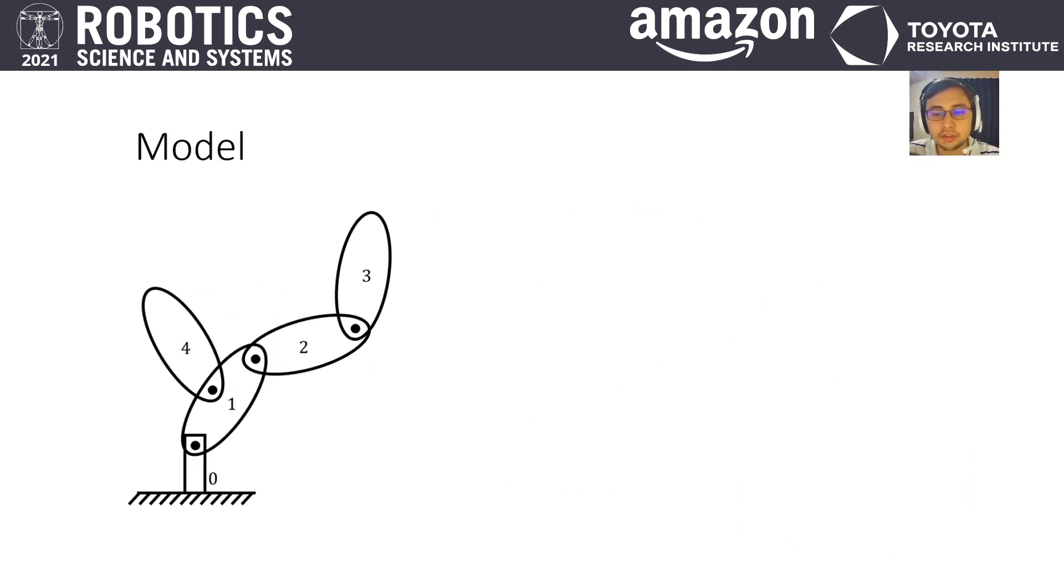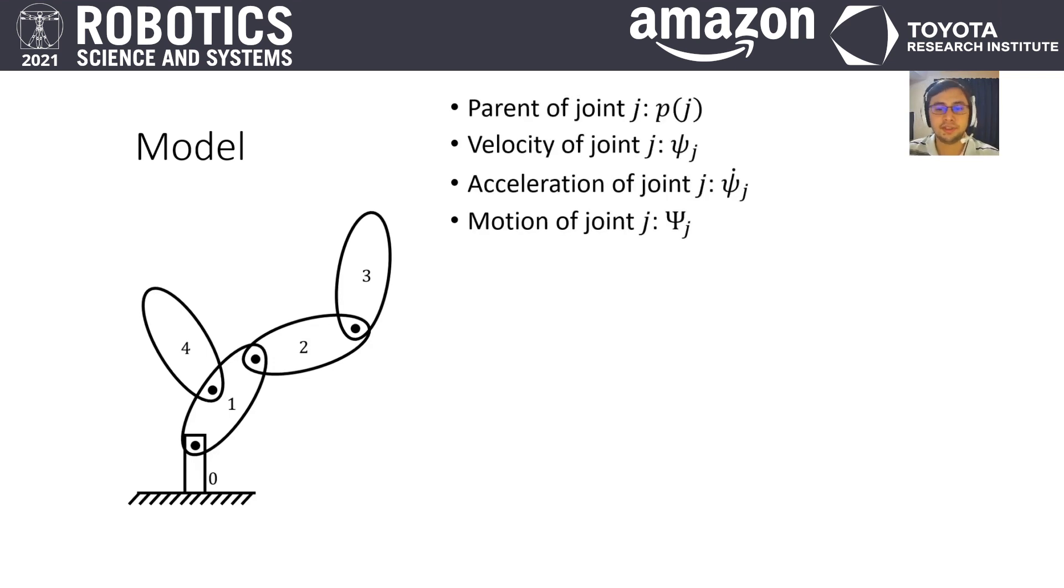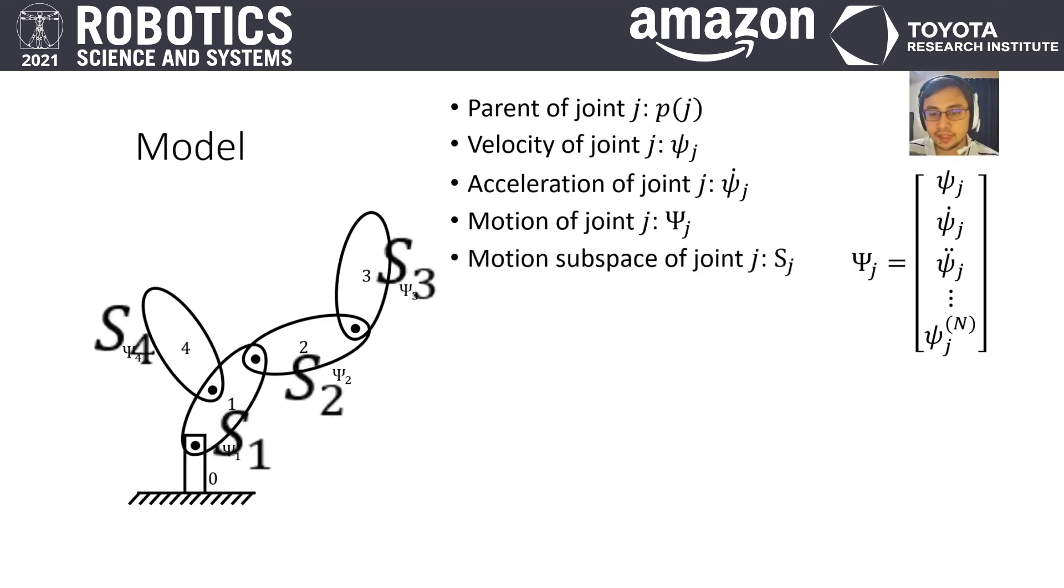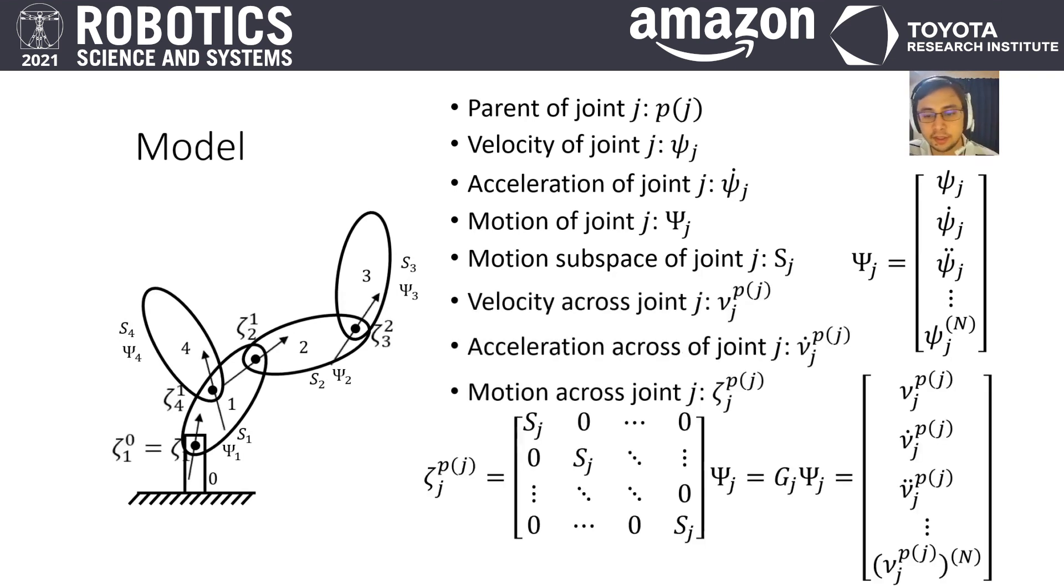Through this presentation, we will use this four-linked model as support and define the following: Pi-Psi as a vector that concatenates velocity, acceleration and all above derivatives of a joint; S, the joint motion suspense that we will consider constant here; and Zeta, the concatenation of spatial velocity, acceleration and all above derivatives. Finally, matrix G is a block diagonal matrix composed of motion suspense.